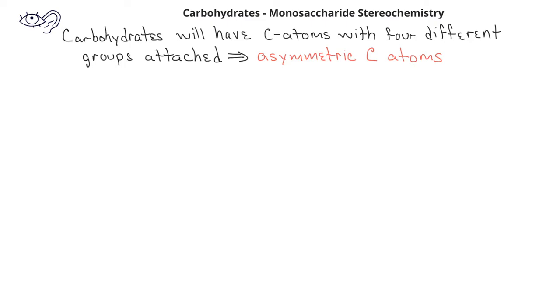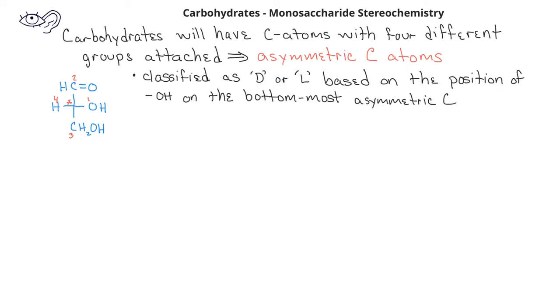In previous videos, we learned about stereochemistry, and specifically that a carbon atom that has four different groups attached can have an enantiomer and will be optically active. Even the smallest monosaccharide, glyceraldehyde, can have a stereocenter or an asymmetric carbon. The second, middle carbon in glyceraldehyde has four different groups attached. Carbohydrates are classified as either D or L based on the bottom-most asymmetric carbon in the Fischer projection. If the hydroxyl group is on the right in the Fischer projection, this is classified as a D monosaccharide. If the hydroxyl group on the bottom-most asymmetric carbon is on the left, we designate that as an L monosaccharide.